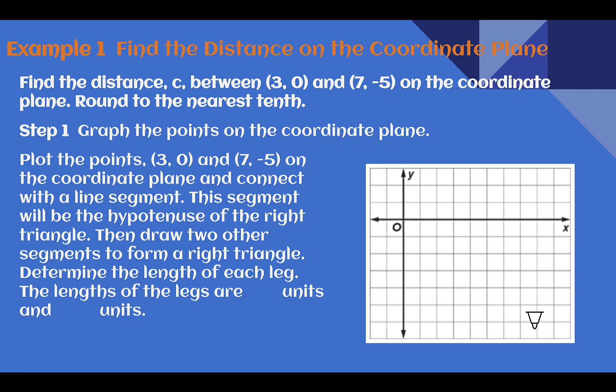Example 1. Find the distance on the coordinate plane. Find the distance c between 3, 0 and 7, negative 5 on the coordinate plane. Round to the nearest tenth. So first, let's graph our points on our coordinate plane. So 3, 0 would be there. 7, negative 5 would be down there.